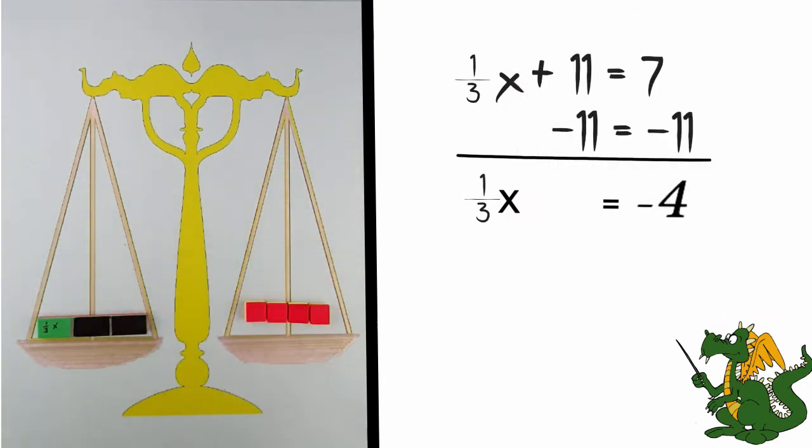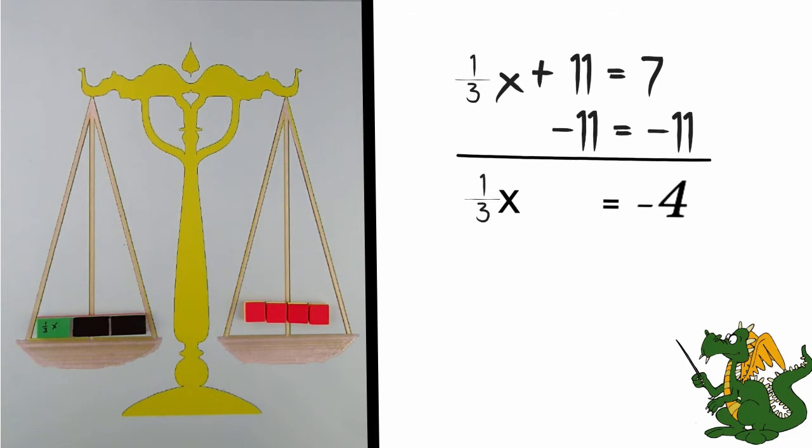Leaving 1 third x on this side of the balance, and negative 4 on the other. I wonder what a whole x would be.